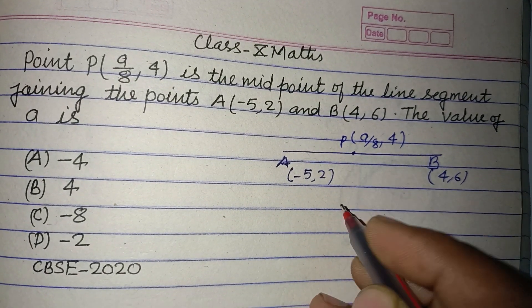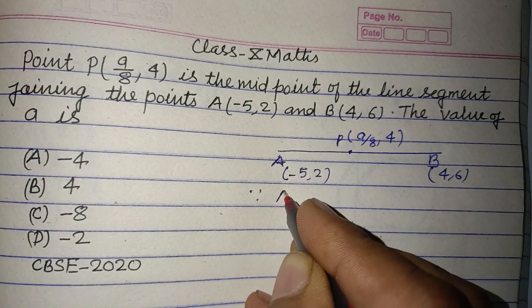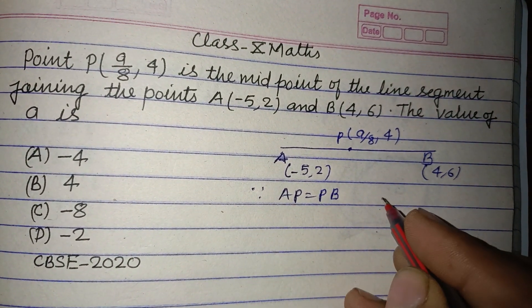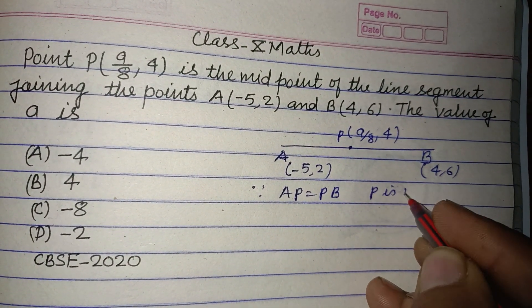So this is the midpoint since AP equals PB. P is the midpoint.